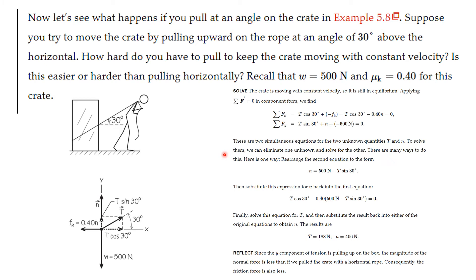We solve by substitution. From the second equation: N = 500 minus T sine 30. Substituting into the first equation gives one equation in T alone. Solving, T = 188 newtons and the normal force N = 406 newtons.